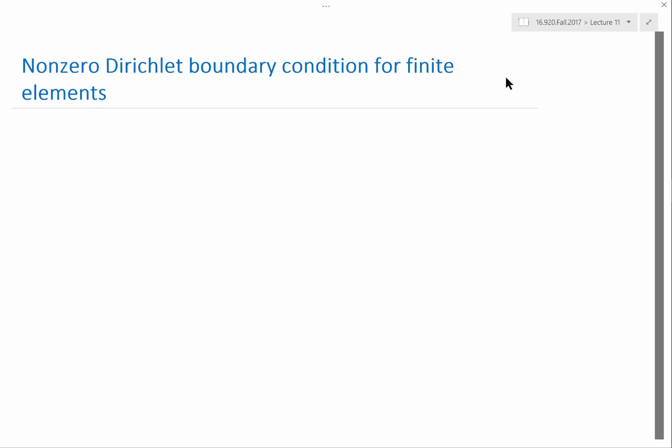We'll be talking about Poisson's equation, and what you learn pretty naturally generalizes to other types of equations. The way we enforce the zero Dirichlet boundary condition is to restrict the space.